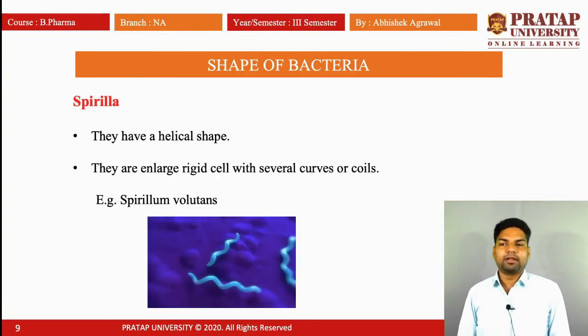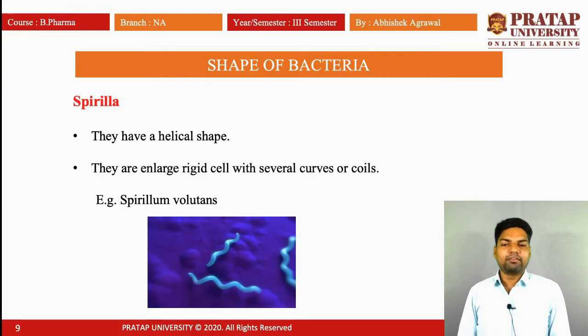Fourth is spirilla. They have a helical shape. They are elongated, rigid cells with several curves or coils.